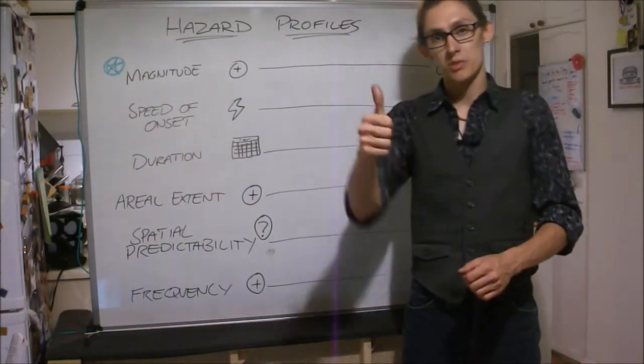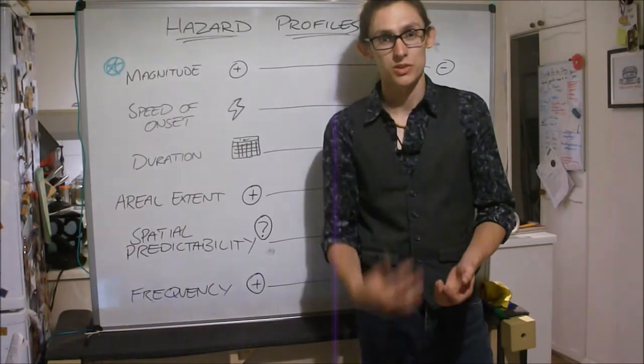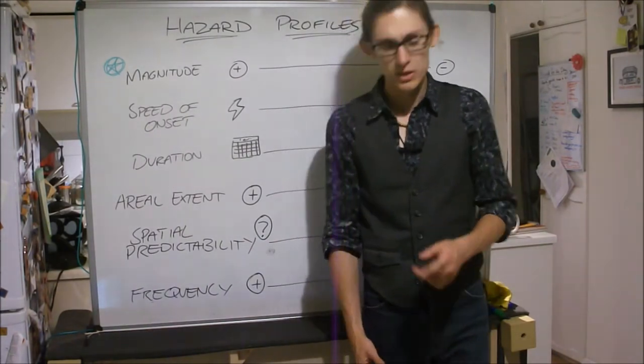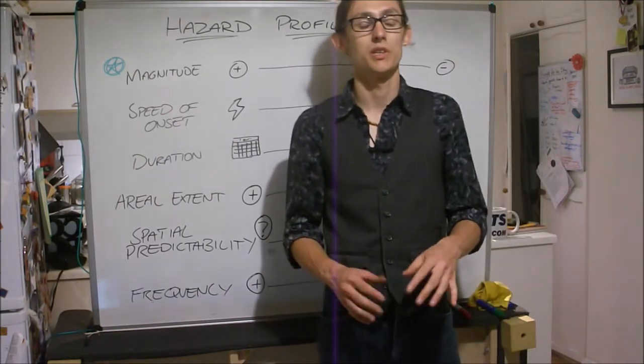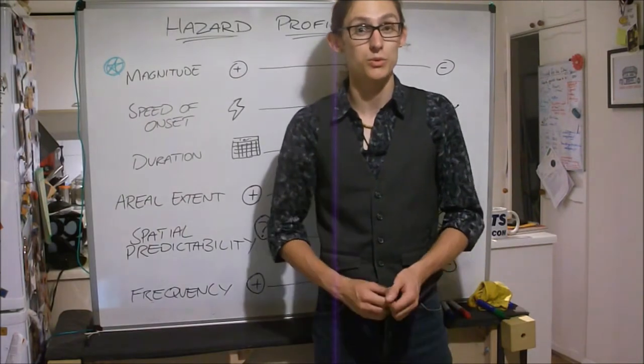So you can sort of set a position on all these sliders for each of these factors. If you look at page 20, you will see an example of a pair of hazard profiles which I'm going to map out for you, show you how you would do that.